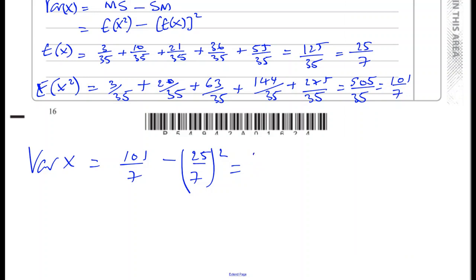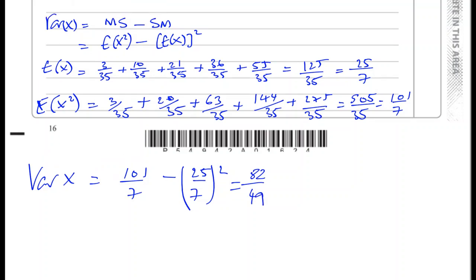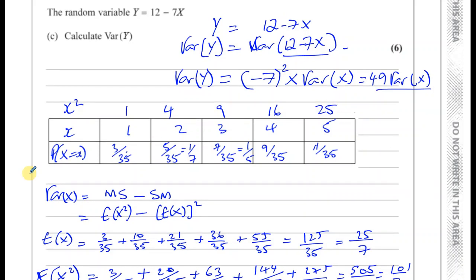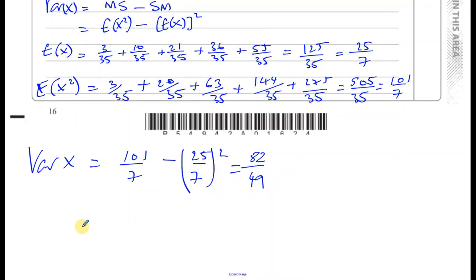That's a nice number because, remember, as we just worked out in the beginning of this part of the question, the variance of Y is 49 times the variance of X. So we can work out what the variance of Y is by just multiplying this by 49. So the variance of Y is 49 times 82 over 49, which is 82. So it seems like we're on the right tracks there because the numbers worked out so nicely. So there we have the answer to part C.